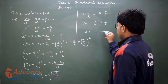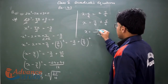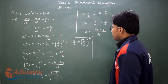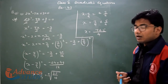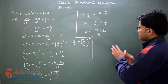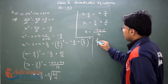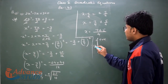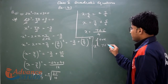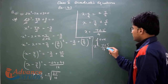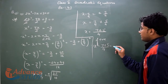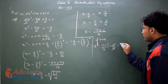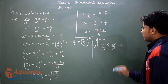So x equals 7 upon 4 plus minus 5 upon 4. Taking LCM as 4, x equals 7 plus minus 5 upon 4. For the first root: 7 plus 5 upon 4 equals 12 upon 4, and 4 times 3 is 12, so x equals 3.